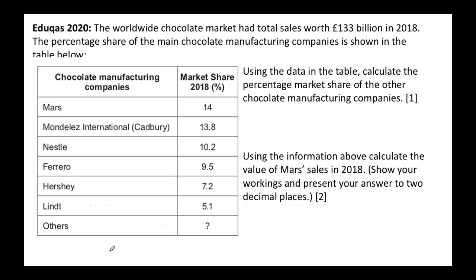This question is looking at market share. The worldwide chocolate market had total sales of 133 billion in 2018. We're given the market share percentages for various companies. Using the data in the table, we need to calculate the percentage market share of 'other' chocolate manufacturers — all the smaller companies combined — which is marked with a question mark.